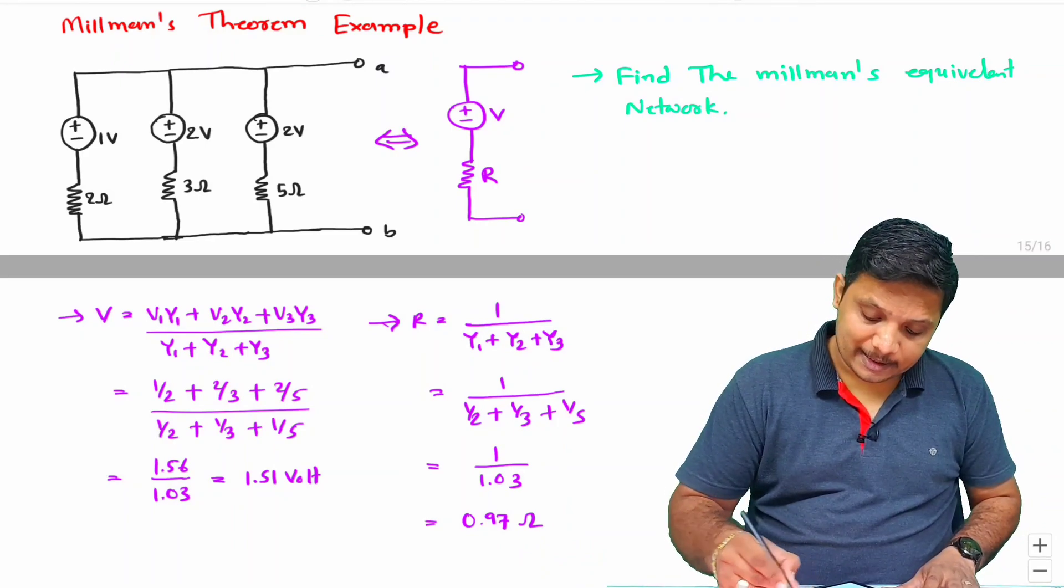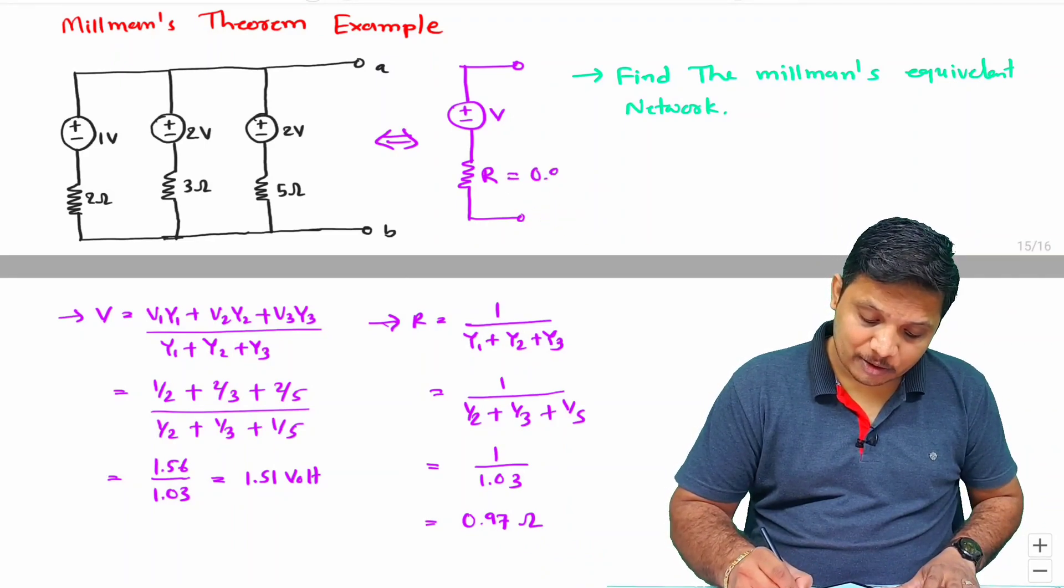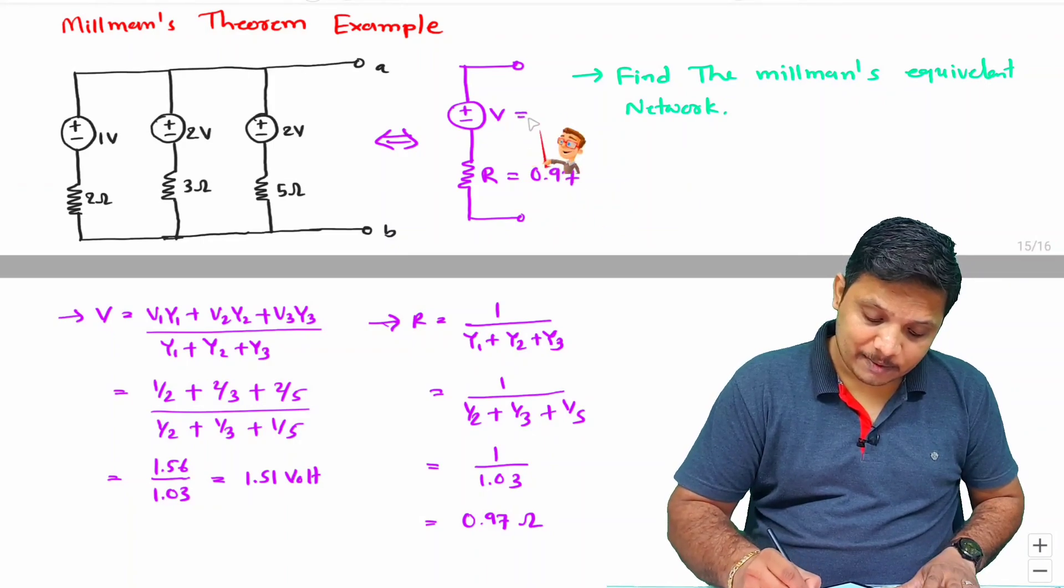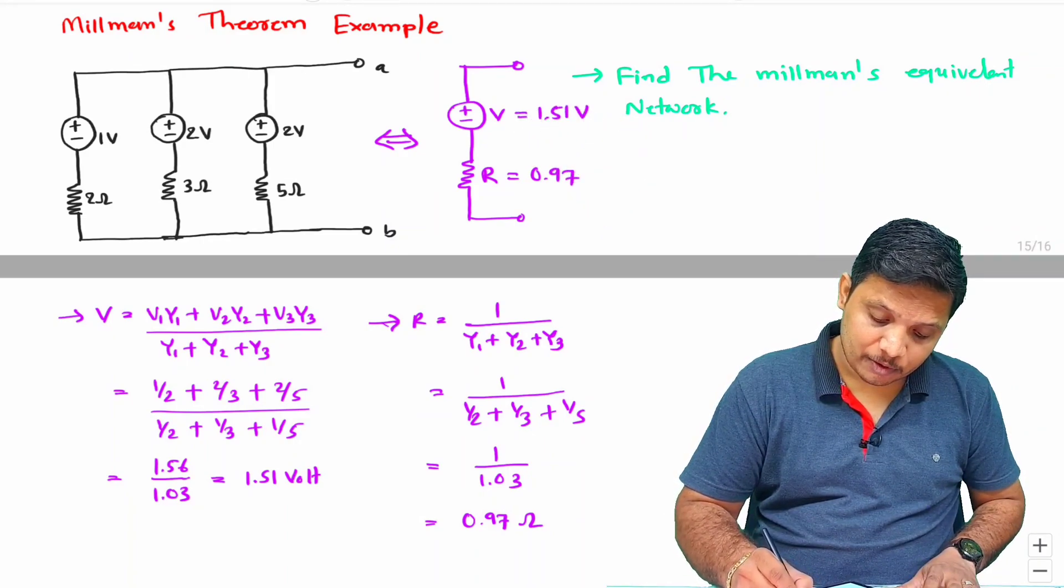Here I can say this R is 0.97 and this V is 1.51 voltage.